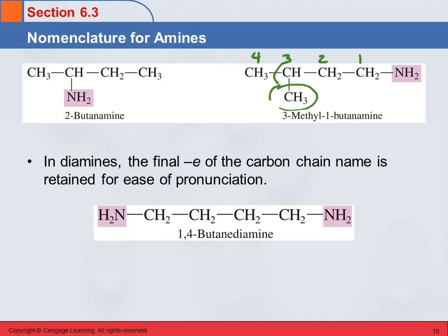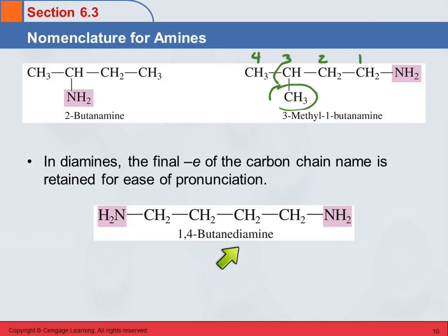If you have a diamine — two amine groups — then you leave the final E on the chain name, because we're going to put in diamine. To make it easier to pronounce, the E stays: butanediamine or ethanediamine. These numbers tell us which carbons those two amine groups are on.